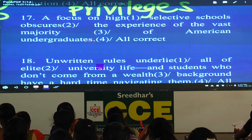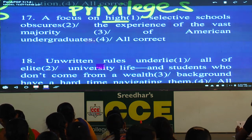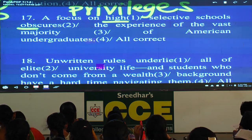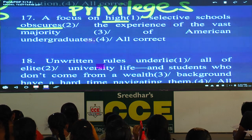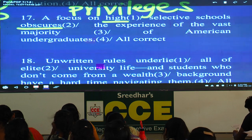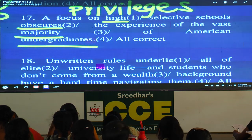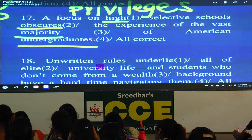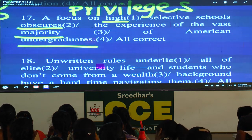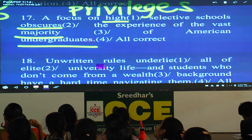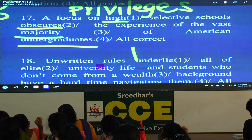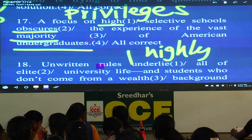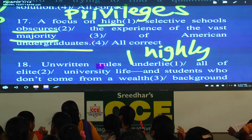Question: A focus on high selective schools obscures the experience of the vast majority of American undergraduates. Underline the word 'high.' Is there anything wrong with 'obscures'? No. Majority? No. Undergraduates? No. So the first word is not correct grammatically. The correct word is 'highly' — please add L-Y. It should be 'highly selective schools.' Write the meaning of obscure: not clear, vague, also mysterious.